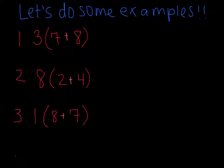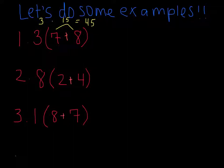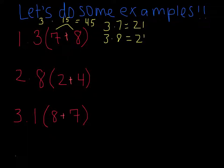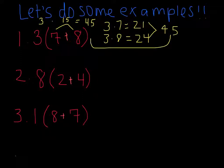Let's do some examples. For the first one, we know 7 plus 8 is equal to 15. Multiply that by 3 and we get 45. Using the distributive property, we have 3 times 7 is equal to 21, and 3 times 8 is equal to 24. Add 21 and 24, you get 45 — the same answer, proving that the property does work.